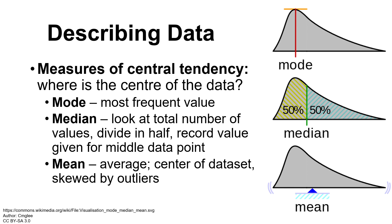So if we had taken nine height measurements, our fifth value — the one right in the center after putting everything in order — would be our median. If you have an even number, you take the middle two numbers, add them together and divide by two. We're looking for that number in the center when everything is in numerical order.